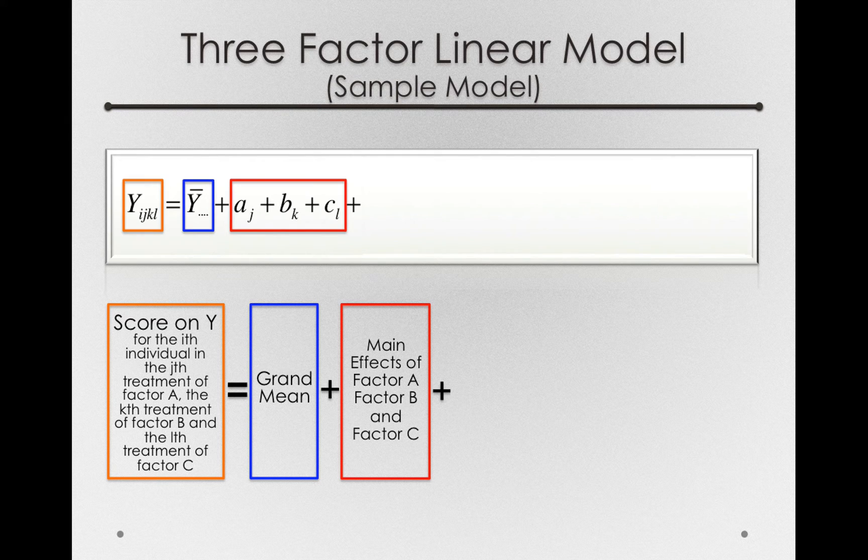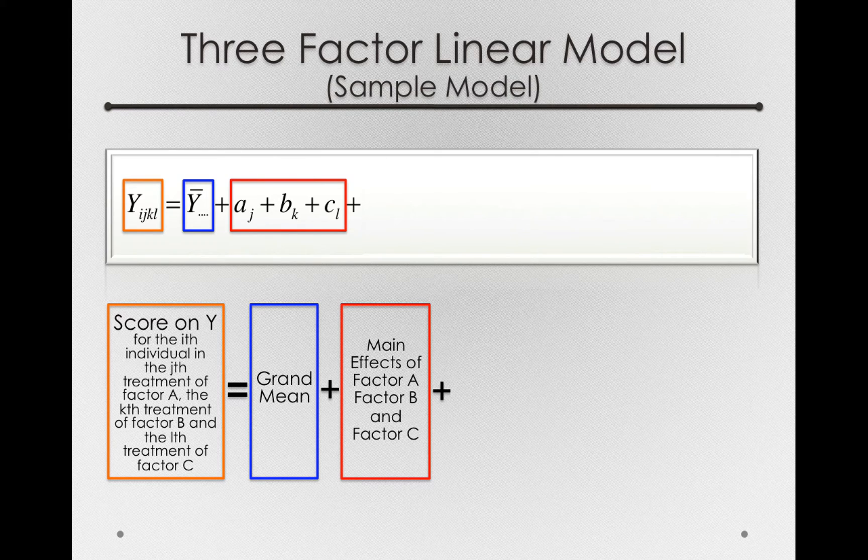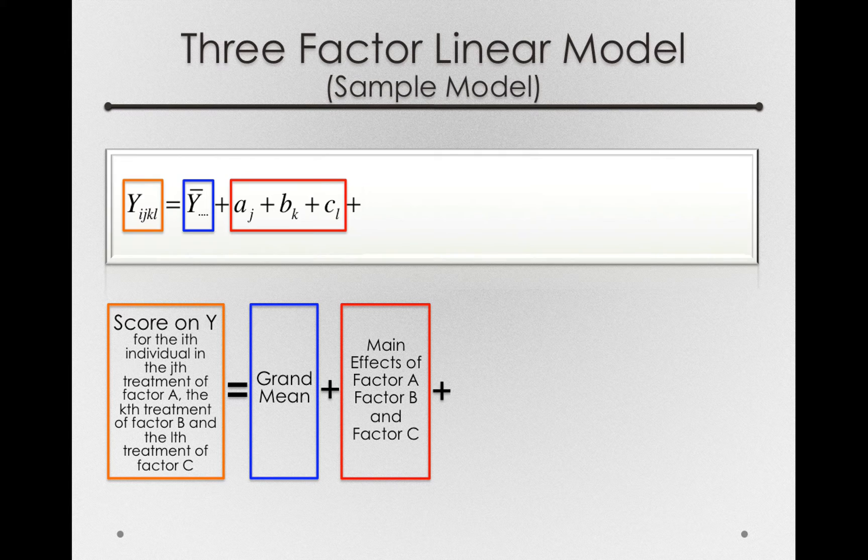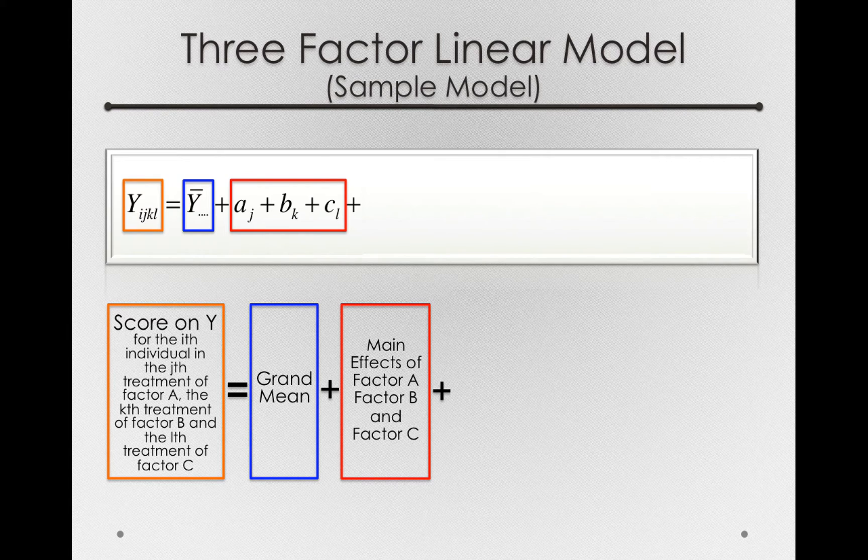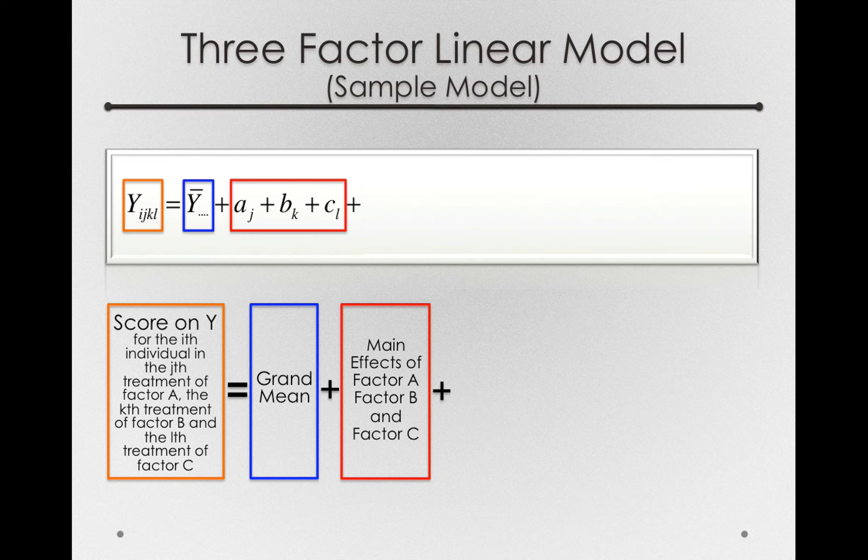Plus, we'll have a group of main effects. So the main effects for factor A, that is the offsets, the a_j's, the main effects for factor B, the offsets b_k's, and the main effects for factor C, the c_l's. Each of those are offsets just like we saw before. The a_j's will be the treatment offsets, ignoring the rest of the factor structure, just how much the factor A conditions differ from the grand mean. The same thing is true for B and for C.